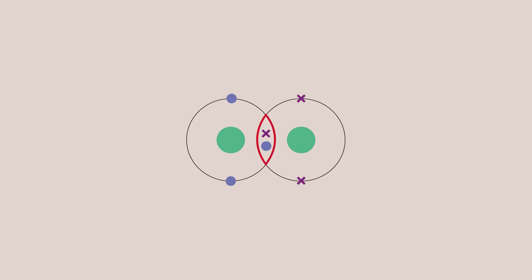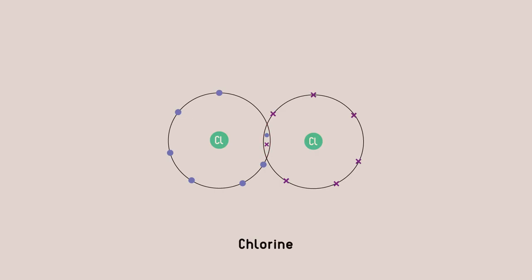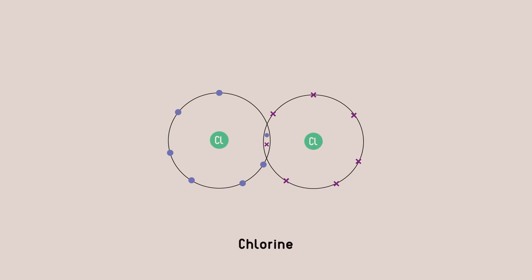Covalent bonds suggest overlap of orbitals to share electrons. Using dot and cross diagrams, we can show that one of the shared electrons comes from each atom. This example shows the bonding in a chlorine molecule. Notice that only the valence electrons have been shown. If we label the nucleus as Cl, we don't need to draw out all the rest.